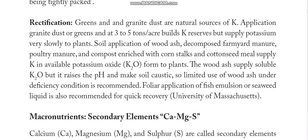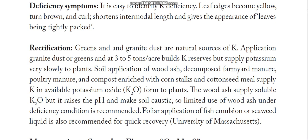Rectification: always remember — greens and granite. Granite dust, available at a cheaper price, is a natural source of potassium, but it takes a long time to release it. Soil application of wood ash, decomposed farmyard manure, poultry manure, compost enriched with corn stalks and cottonseed meal — all these supply abundant potassium. However, wood ash supplies soluble potassium but raises the pH and makes soil caustic, so limited and judicious use of wood ash under deficiency conditions is recommended; it should not be applied in excess.